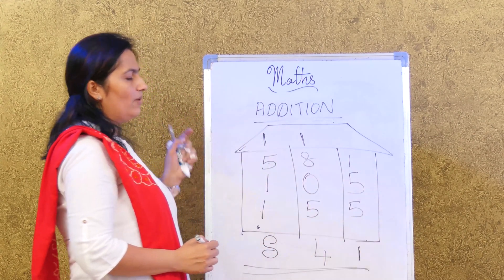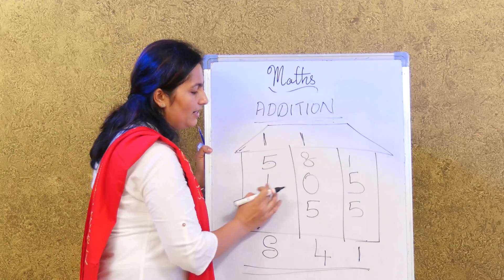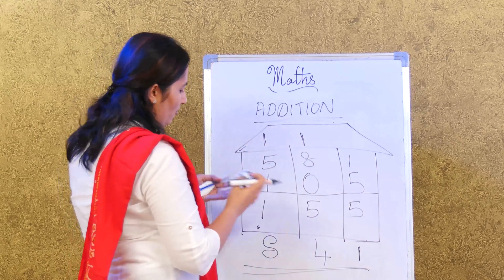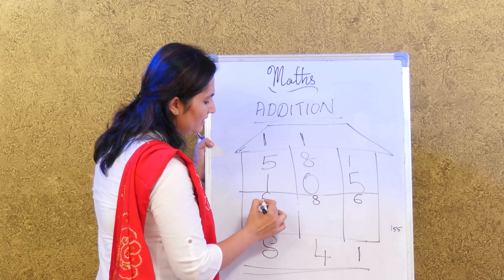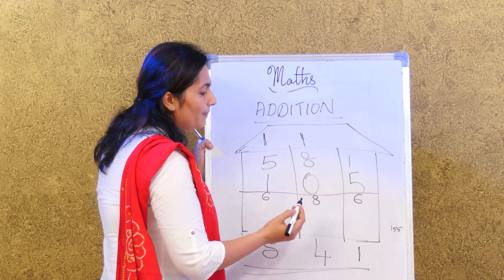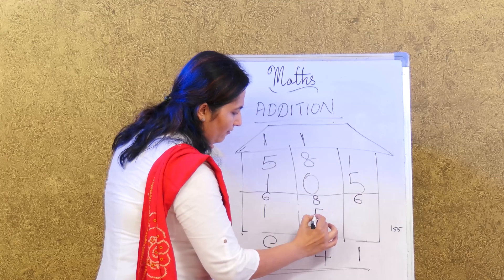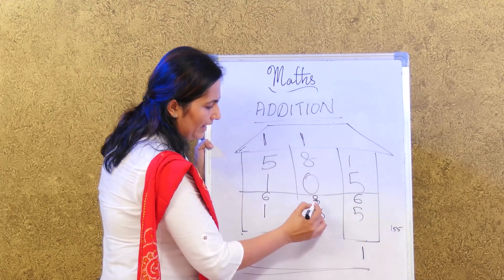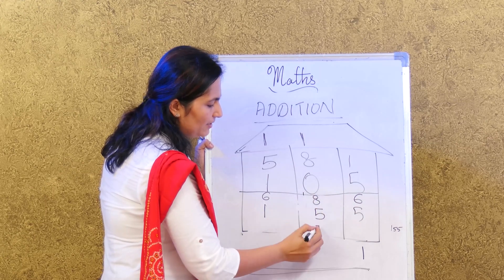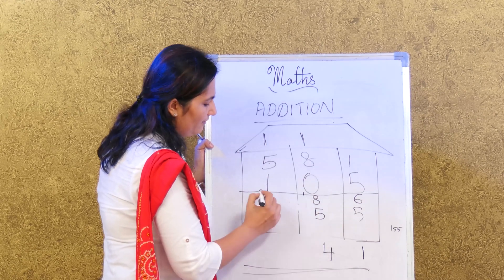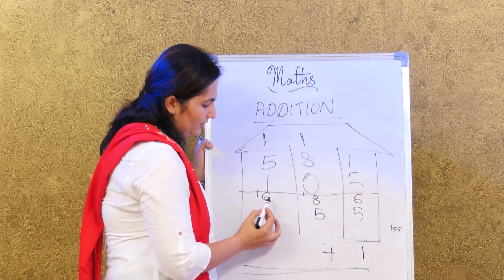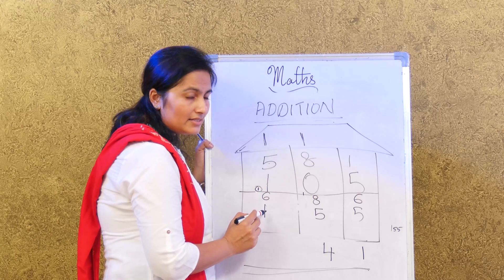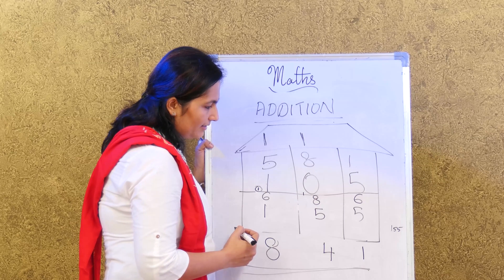Now method two: add 581 and 105 first. 5 plus 1 is 6, 8 plus 0 is 8, 5 plus 1 is 6 — we get 686. Then we add the next addend, 155. 6 plus 5 is 11, carry forward 1. 8 plus 5 is 13, plus 1 is 14 — write 4 and carry 1. 6 plus 1 is 7, plus carry 1 is 8. So we get 841 — the same answer!